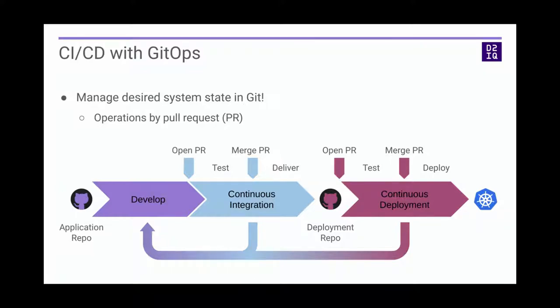Once tests are successful, we'll deliver into the operational repository. These might be the same role or the same repository. But on the operations side, there will be the YAMLs required to deploy to Kubernetes. Once that operations person approves the pull request and merges it, the build and deploy to the production environment will automatically happen. So let's see what this really looks like in practice.